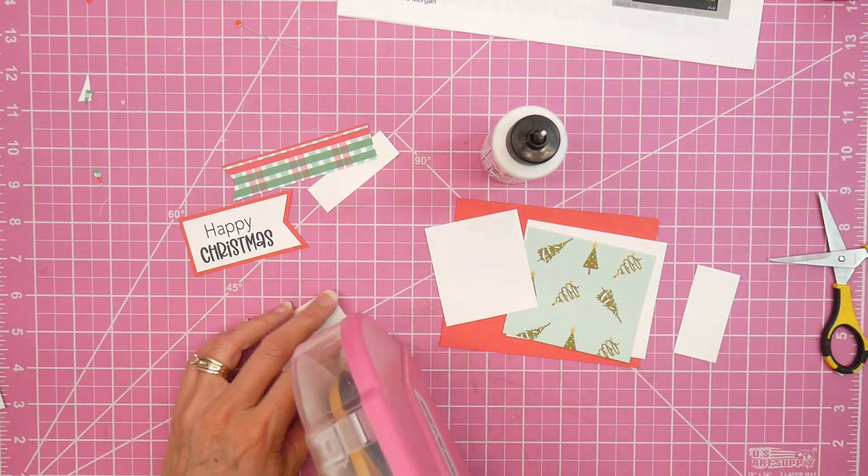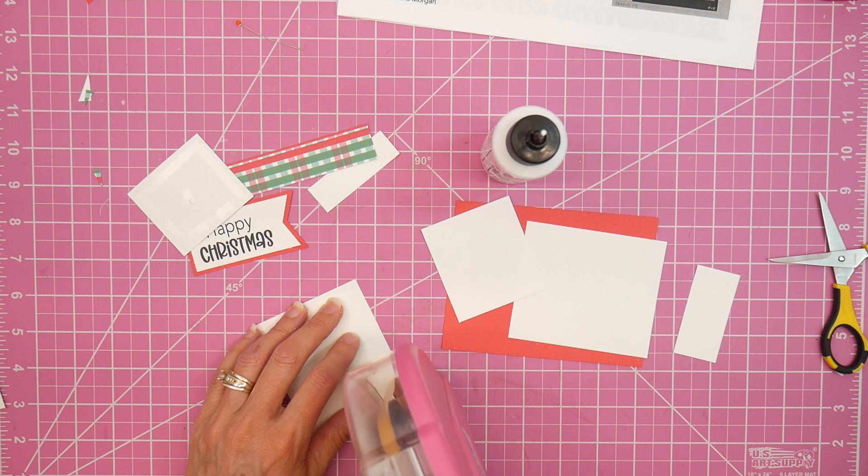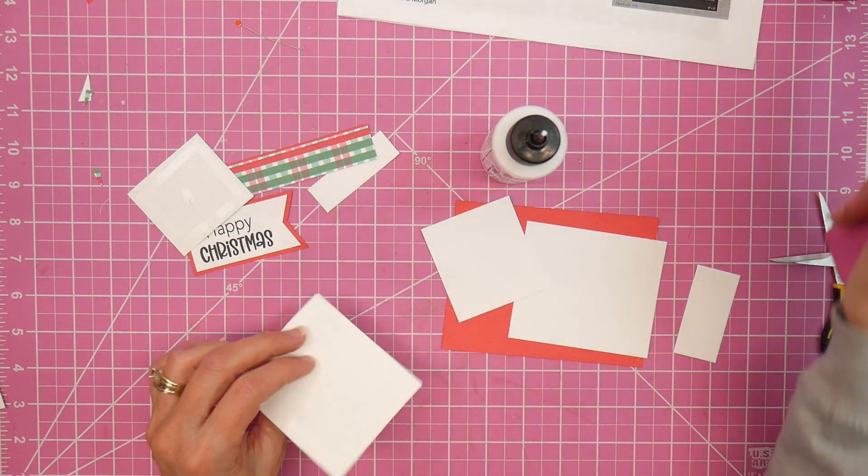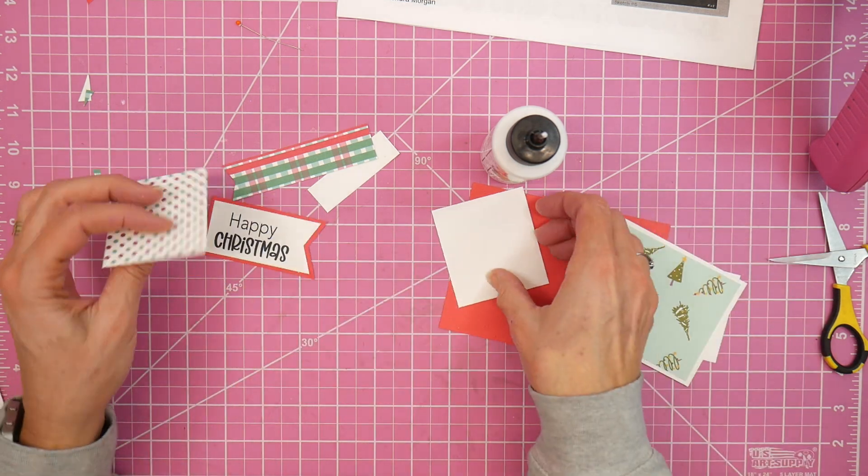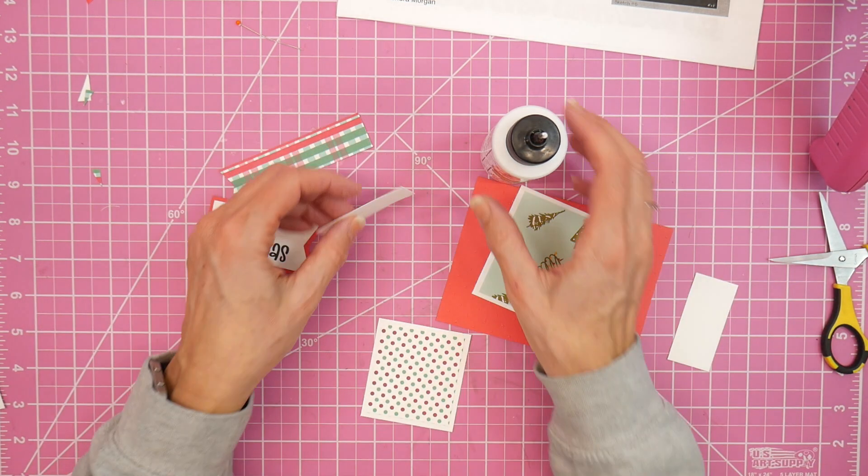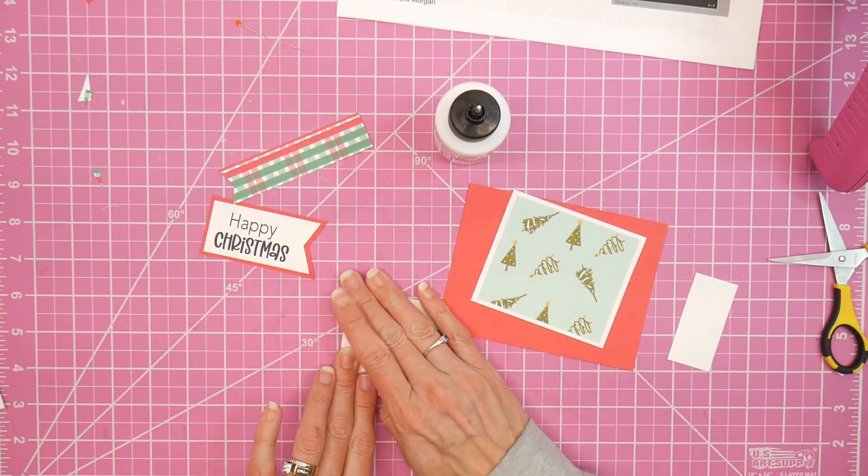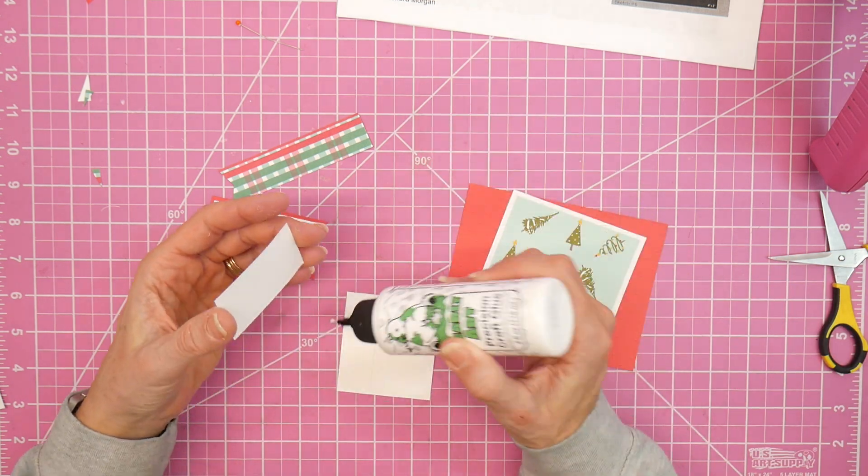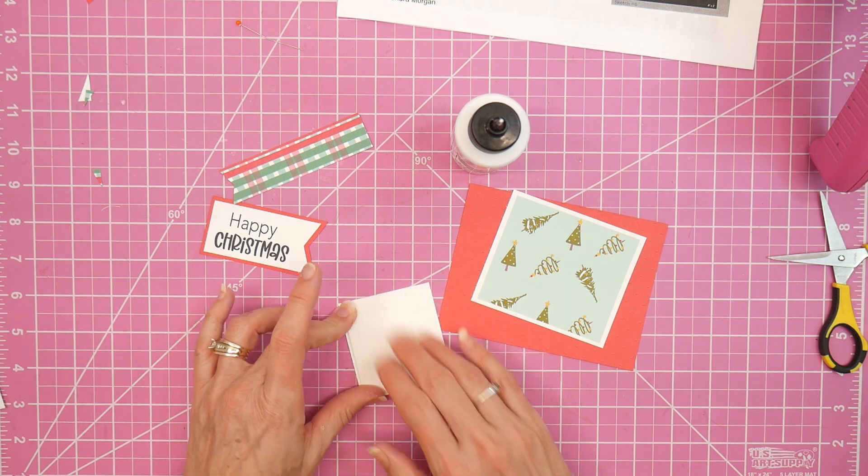I'm going to layer my pattern papers and get everything assembled here. And again, I'm using a bunch of white paper - white cardstock scraps - to help even up my layers that hang off the edges.